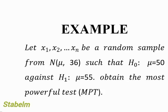The question says: let X₁ up to Xₙ be a random sample from a normal distribution N(μ, 36), where the variance is 36. The null hypothesis is μ₀ = 50, tested against the alternative hypothesis μ₁ = 55. We have to obtain the most powerful test of this distribution using the information given.